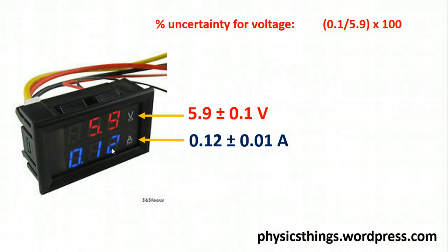So, let's work out the uncertainty for the voltage. I take my absolute uncertainty, my plus or minus 0.1 volts, I divide it by my reading, and I multiply it by 100 to give me a percentage uncertainty of 1.69%.